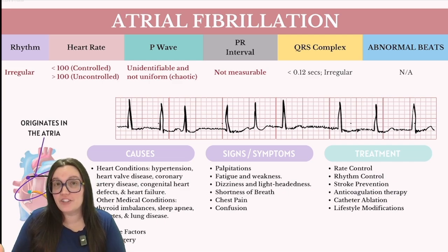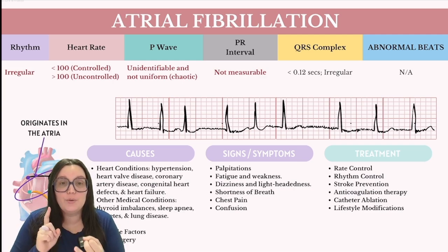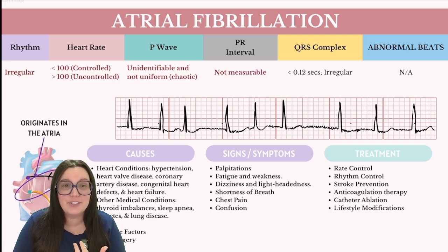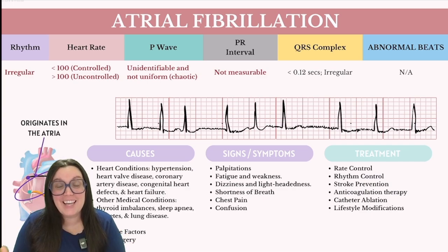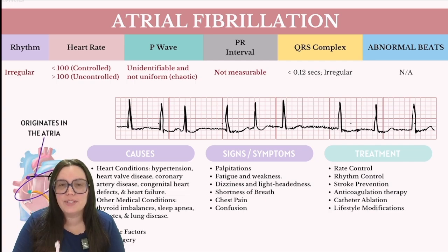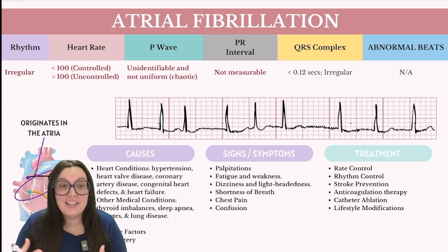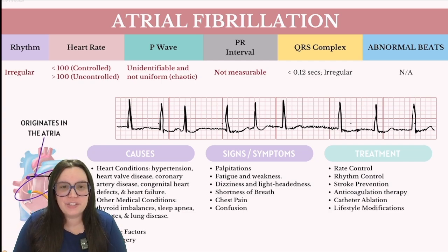Treatment strategies for atrial fibrillation focus on rate control, rhythm control, and stroke prevention. For rate control, we may see medications like beta blockers or calcium channel blockers. With rhythm control, antiarrhythmics or procedures like electrical cardioversion may take place — cardioversion is when we shock the heart back into its normal rhythm. For stroke prevention, due to the high risk of blood clotting in the atria, patients are placed on anticoagulants such as warfarin or newer agents. If all else fails, catheter ablation is a procedure that destroys the area of heart tissue causing the irregular signals.